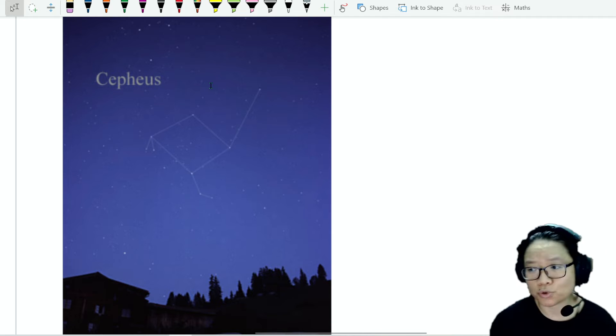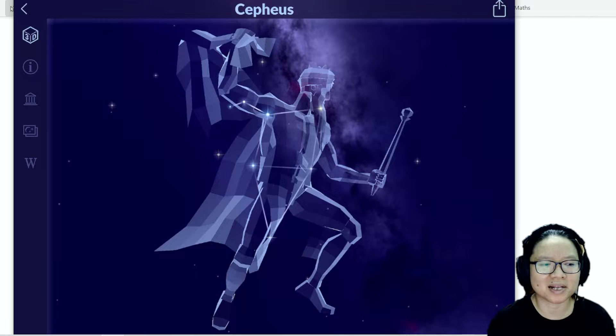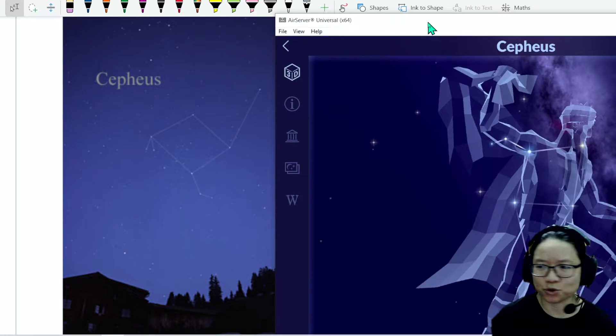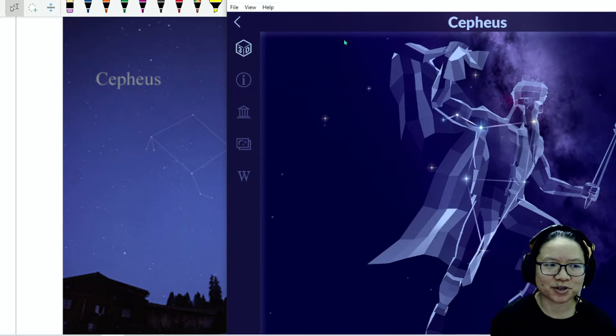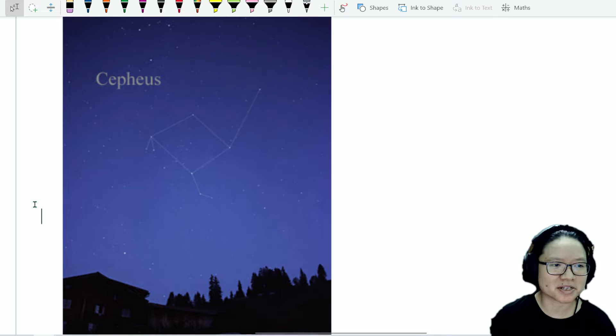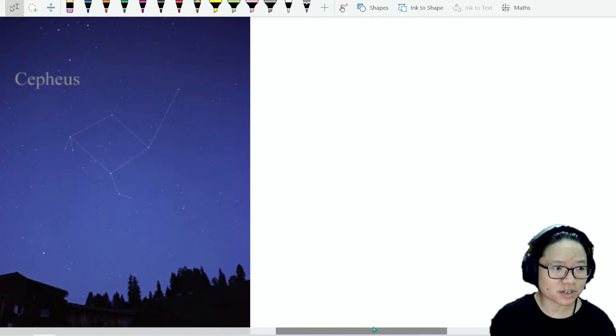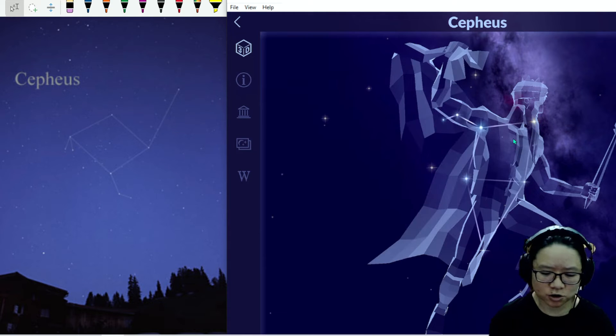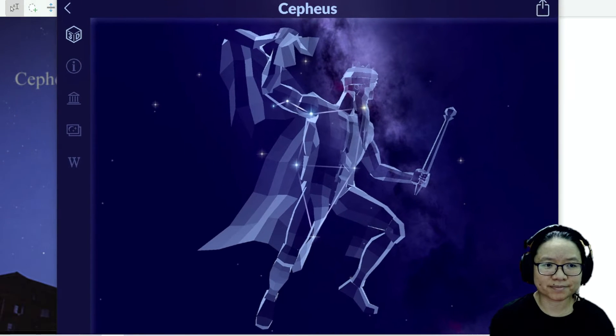Cepheus, if you don't know, is actually the name of a king from Greek mythology. So it looks a bit like my dude here. People have a good imagination, so they sort of visualize the constellation of stars here to be looking something like this one. You can see the king here.